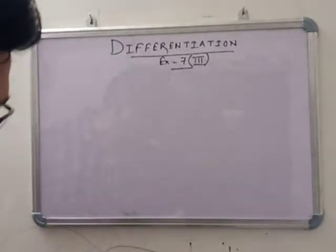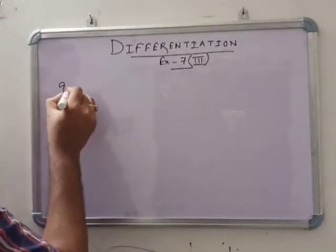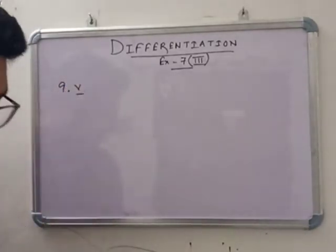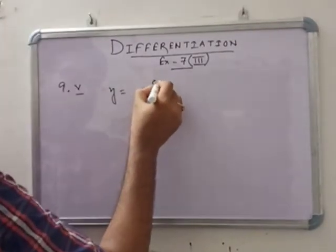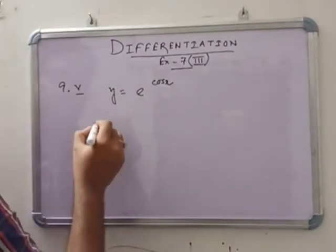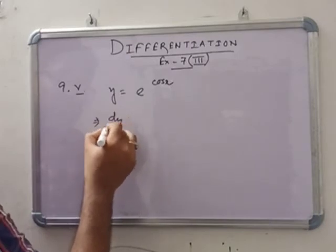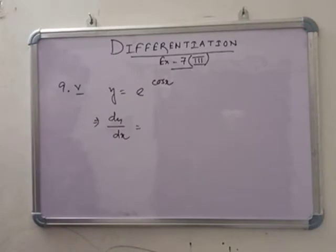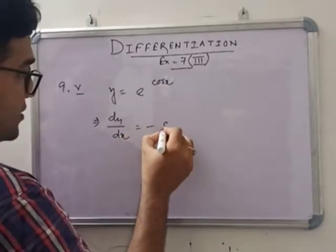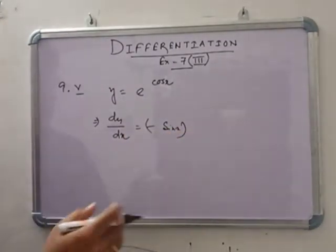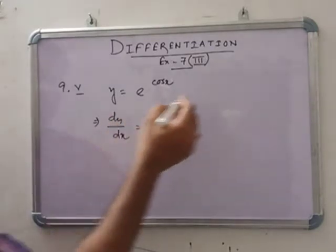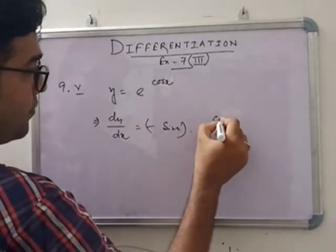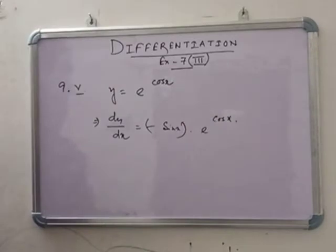In number 9, given y = e^(cos x). Here dy/dx: the derivative of cos x is -sin x, and the derivative of e^(anything) is the same e^(anything). So dy/dx = -sin x · e^(cos x).